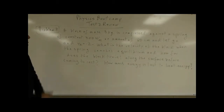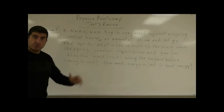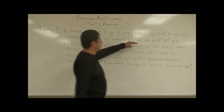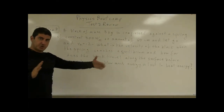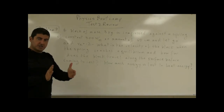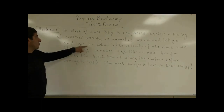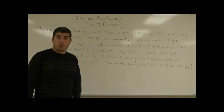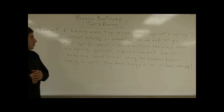The mass is 3 kilograms, compressed against a spring of constant 300 Newtons per meter. The block is held to the spring, compressed an amount of 60 centimeters — 0.6 meters — and then you let go. Assume the surface has a coefficient of kinetic friction of 0.2. What is the velocity of the block when the spring reaches equilibrium?